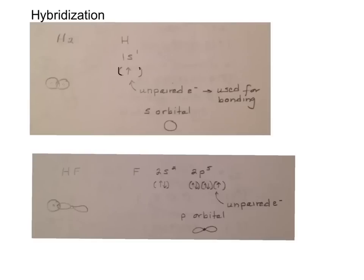If you remember drawing an orbital diagram, we put it in the s orbital. This is an unpaired electron. When an atom has an unpaired electron, that electron can be used for bonding. If you remember, an s orbital is just a sphere.